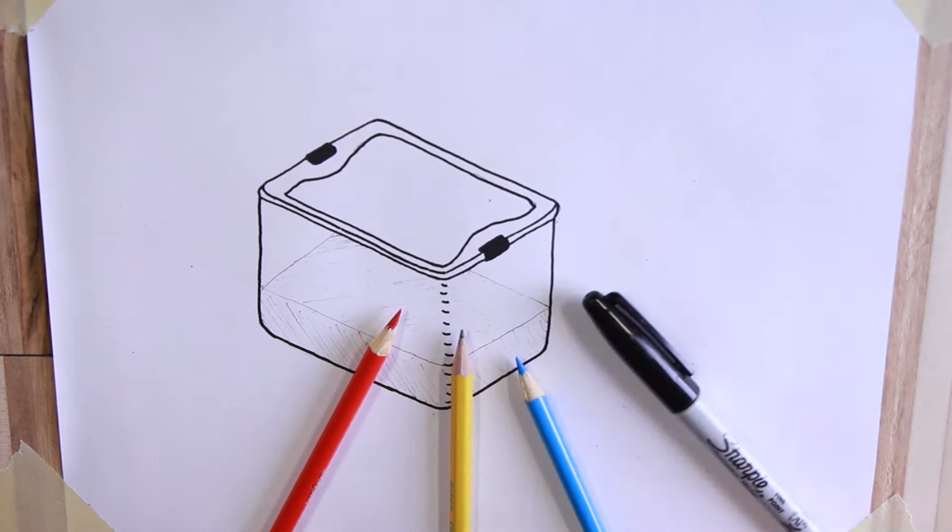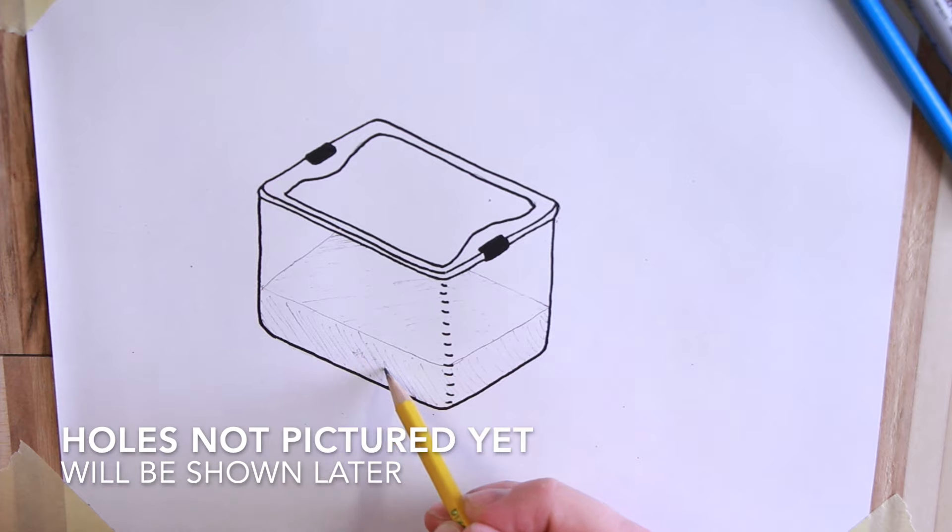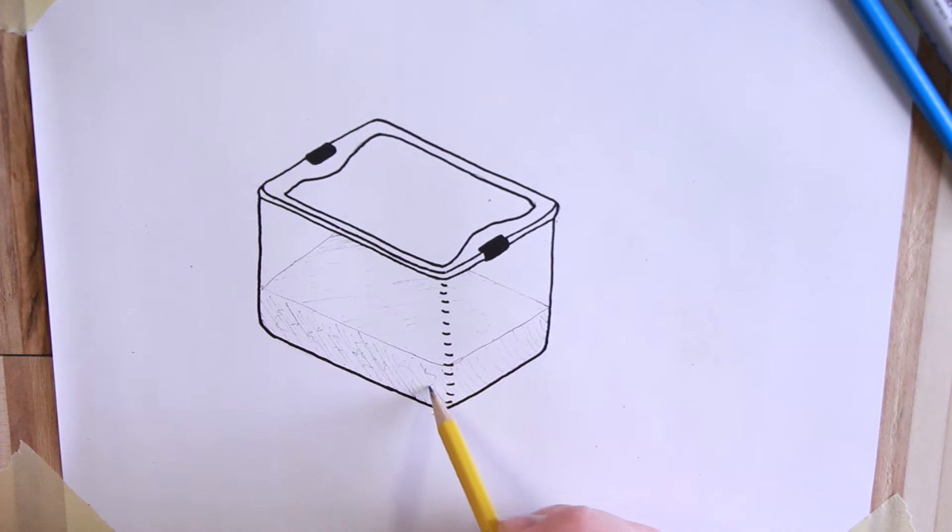I stole a few pencils from my kids art room and tried my hand at some art. I'll be using a red pencil to indicate heat, a gray pencil to indicate CO2, and a blue pencil to indicate cool fresh air.